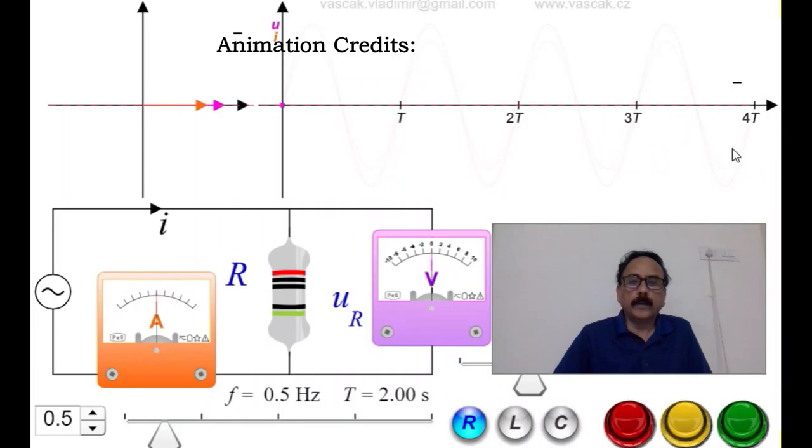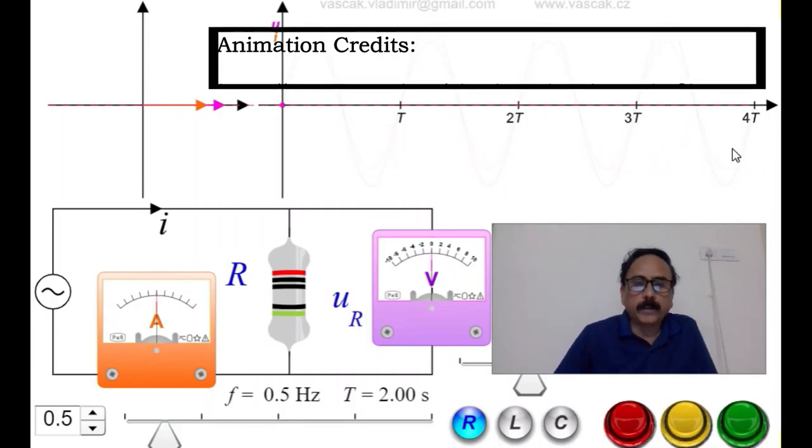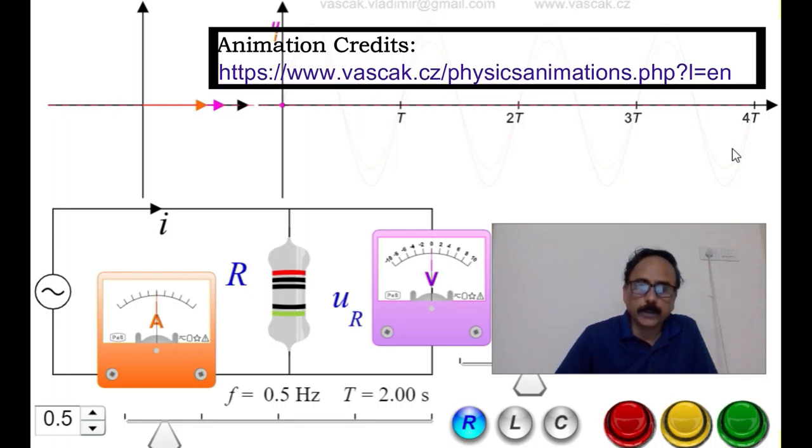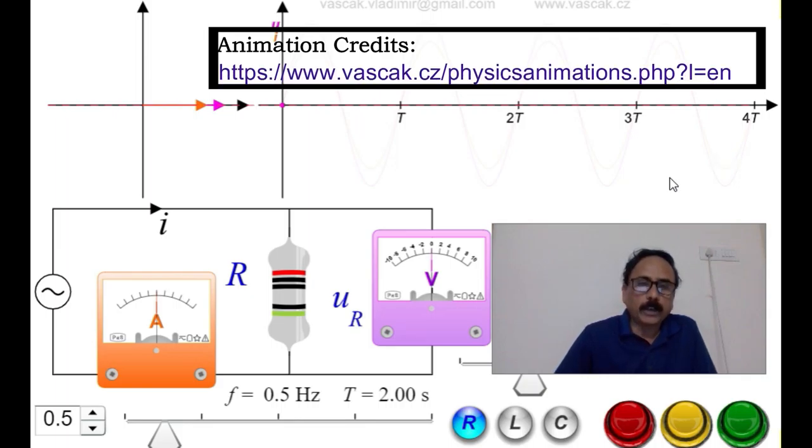So, this is the description of resistance across AC. Here the main pivot equation is I equals E by R. That is Ohm's law. Now, let's see the same in the animation.